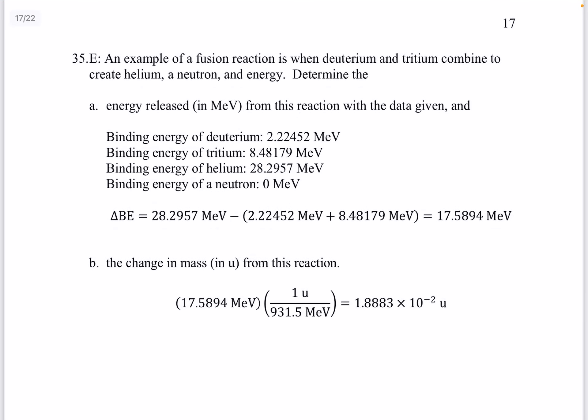Question 35. An example of a fusion reaction is when deuterium and tritium combine to create helium and neutron in energy. Determine a the energy released from this reaction. And b the change in mass from this reaction. So you can pause the video and check this out.